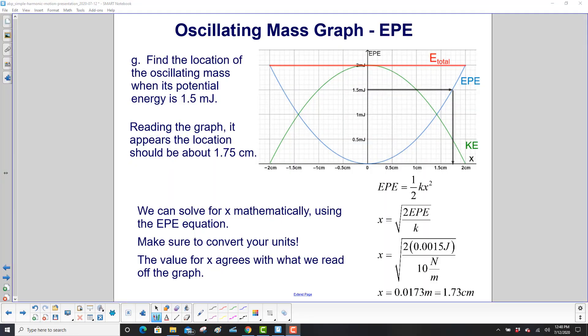Now we're going to go backwards. We want to find the location of the oscillating mass when its potential energy is 1.5 millijoules. So graphically, here's 1.5. Go over until you hit the EPE curve. Go on down. And it looks like it's about 1.75 centimeters.